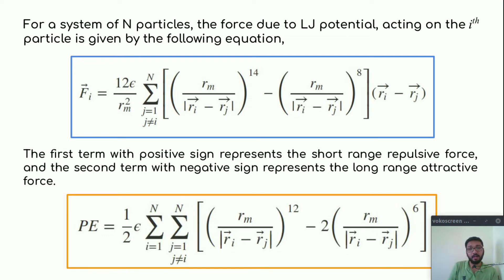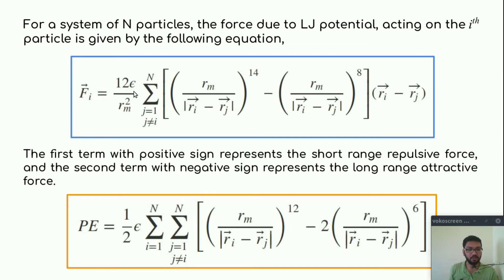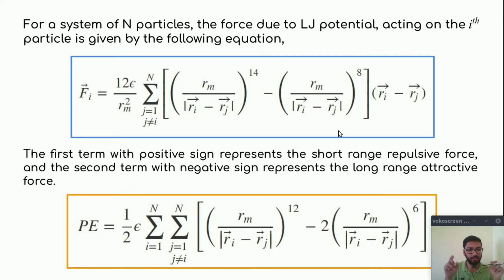For a system of n particles, the force due to this LJ potential acting on the ith particle is given by this big formula. Here Ri is the distance from the origin, and Rm and Epsilon are constants. As we have also discussed in the previous presentation, Epsilon is the strength of the minima and Rm is the shift of the minima. In this formula, the first term with a positive sign represents the short-range repulsive force, and the negative sign with the 8th-order power indicates the long-range attractive force.